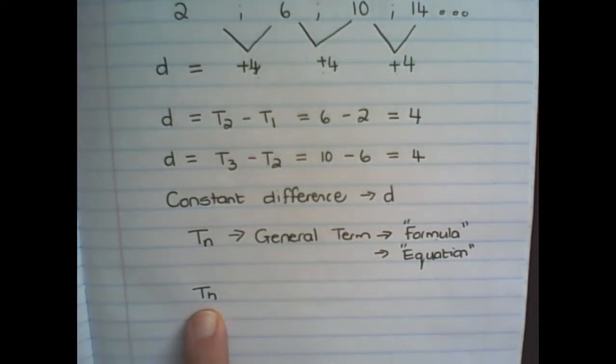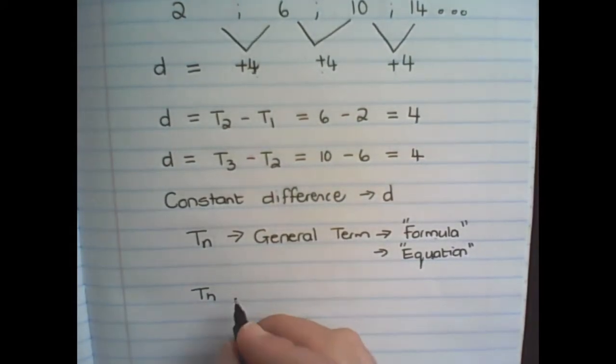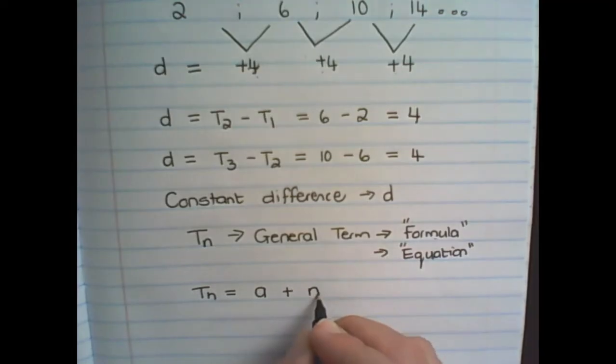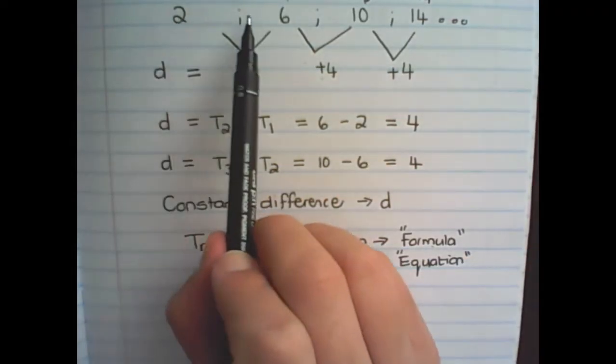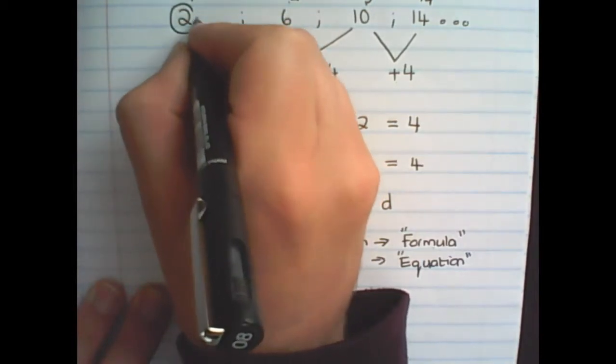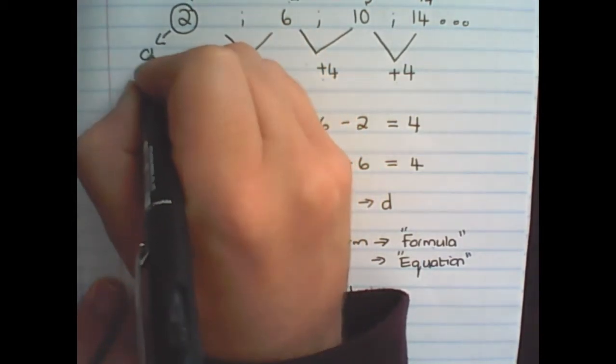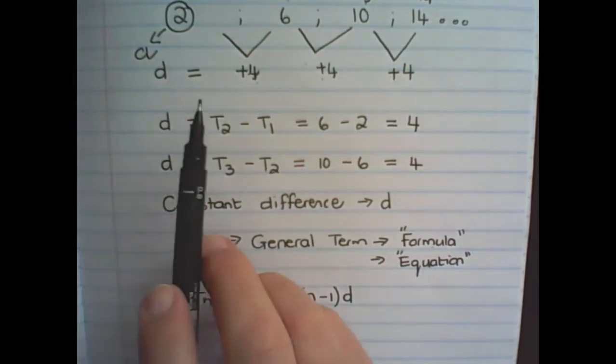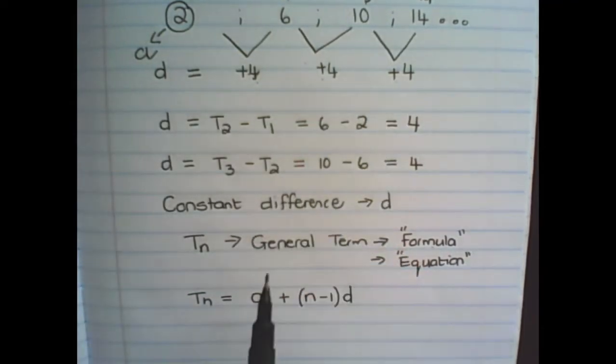So the general rule that we use for linear patterns is Tn is equal to a, plus n, minus 1, d. Where a represents the first term in the pattern. So in our number pattern of 2, 6, 10, and 14, the a value would be 2. And we already found the constant difference of 4.